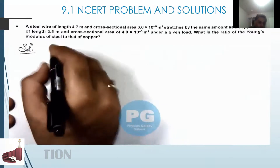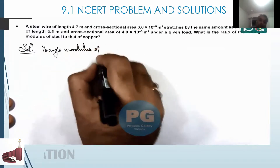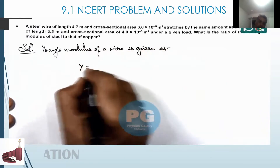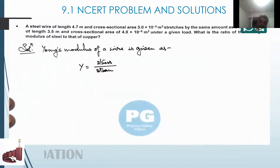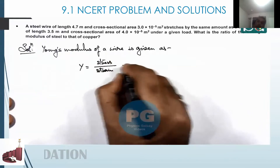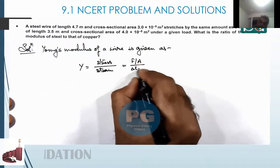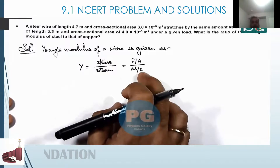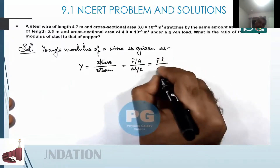Here we make use of the theoretical concept we have studied. Young's modulus is given as stress divided by strain. The stress is the applied force upon the cross-sectional area, and strain is the change in length per unit length — delta L is the extension due to the applied stress, and L is the actual length. So Young's modulus Y = FL / (A × delta L).